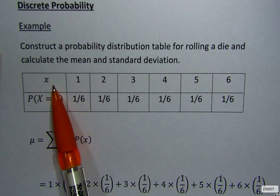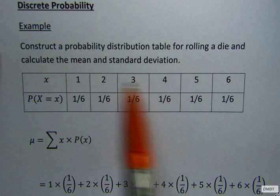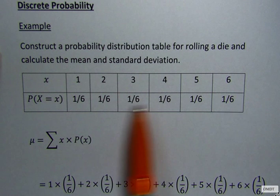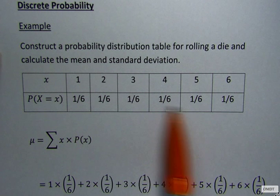So our x are the possible outcomes and that is 1, 2, 3, 4, 5, 6. These are the possible outcomes for rolling a die. And the probability for each of these possible outcomes is 1 over 6.